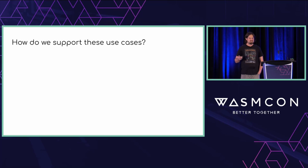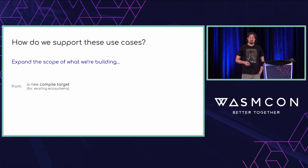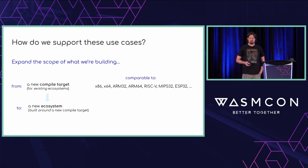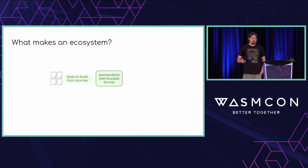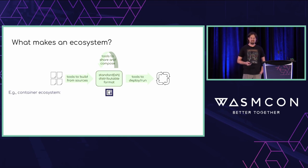To support these four use cases, we need to expand from a compiled target for existing ecosystems — comparable to x86 and ARM — to a new ecosystem built around a compiled target, comparable to containers, NPM, Nix, Maven, Helm, Debian. What makes an ecosystem? You need a standard distributable format, tools to build it from different sources, tools to deploy and run it, and tools to share and compose it. In the container world, OCI defines the standard container, Docker build builds it, Docker run and Kubernetes run and deploy it, and Docker push and Docker Compose share and compose it.